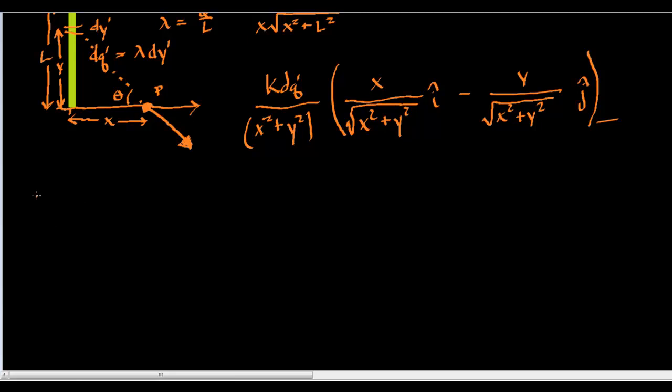So I'm going to get k lambda the integral from 0 to l of y over the square root - I'm going to multiply the denominator, so I'm going to get x squared plus y squared to the 3 halves. And then the dy comes out here.